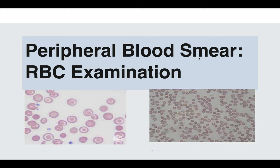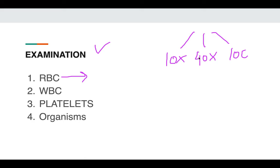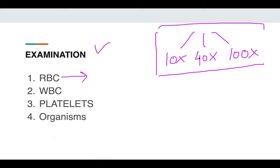In this video we'll discuss peripheral blood smear — this is part two. In the first part we discussed how to prepare the smear and how to stain it. Now in this video we'll discuss the examination. We will discuss only the examination of the RBCs; in the next video we'll discuss the WBCs. When examining a blood smear, we examine under three powers of the light microscope: 10x, 40x, and 100x. We examine the RBCs, WBCs, platelets, and organisms like malaria and filaria.